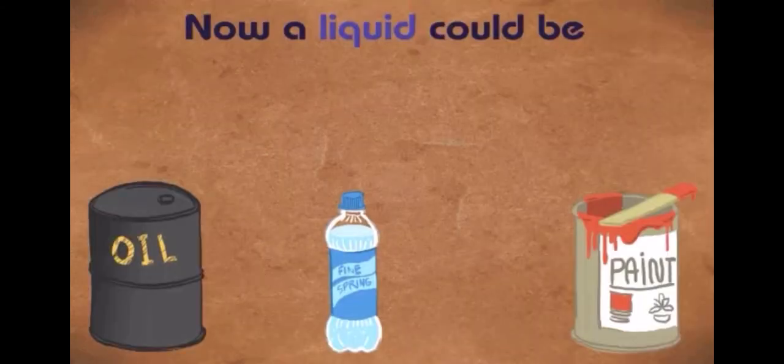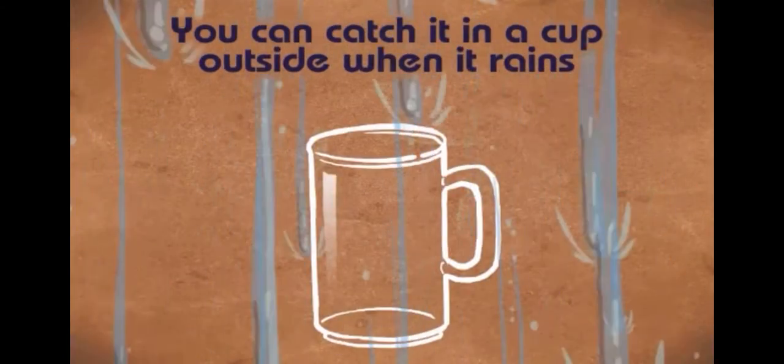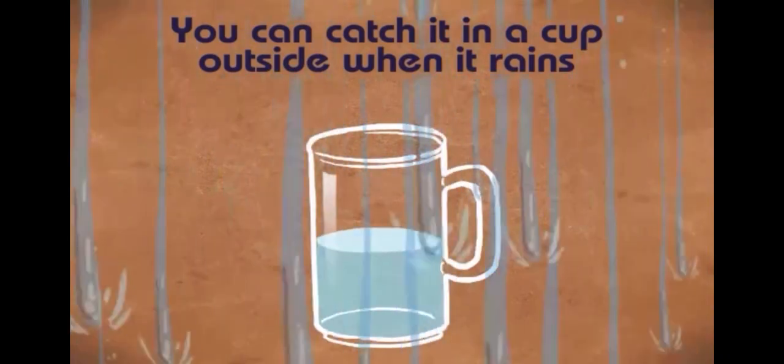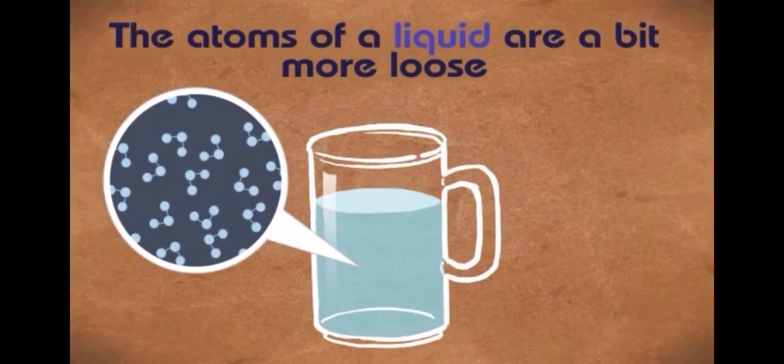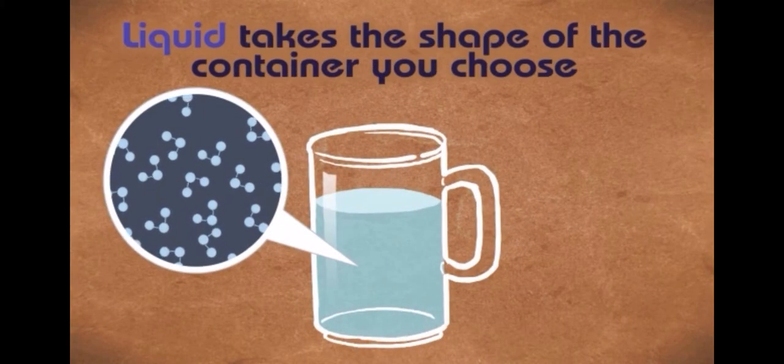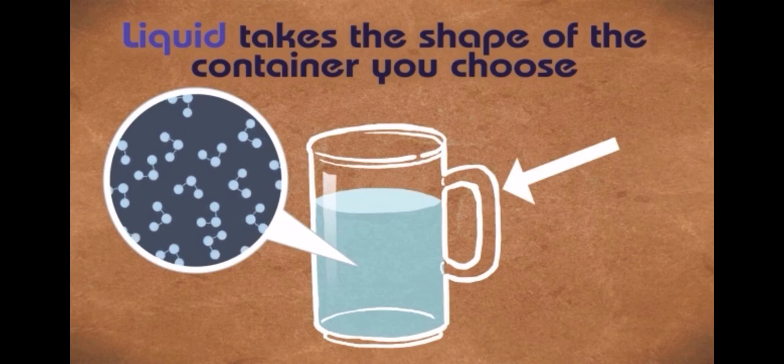Now a liquid could be oil, water, or paint. You could catch it in a cup outside when it rains. The atoms of a liquid are a bit more loose. Liquid takes the shape of the container you choose.